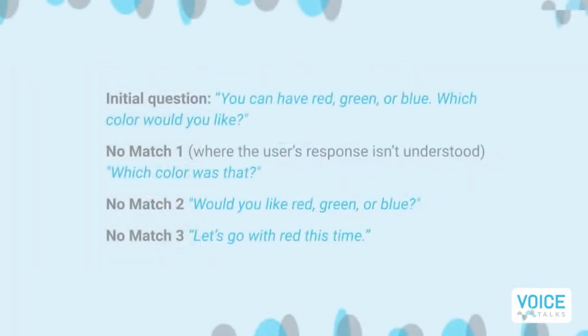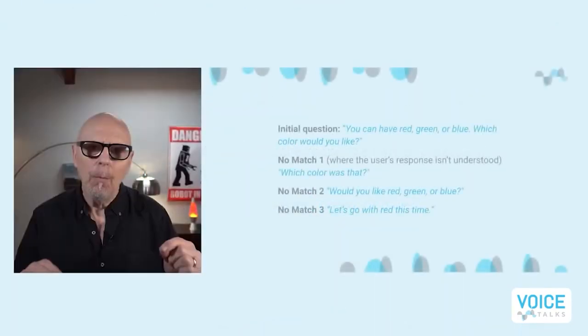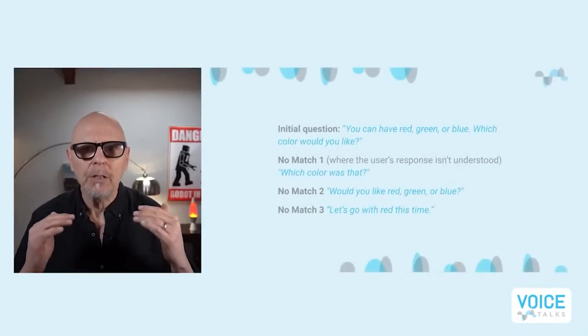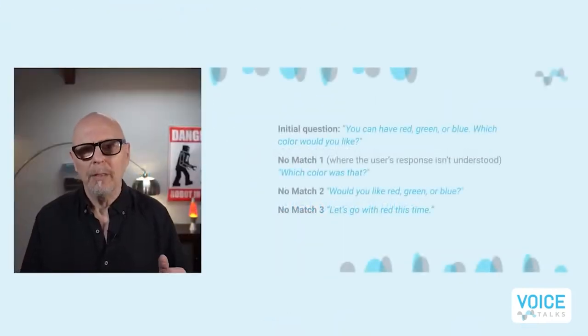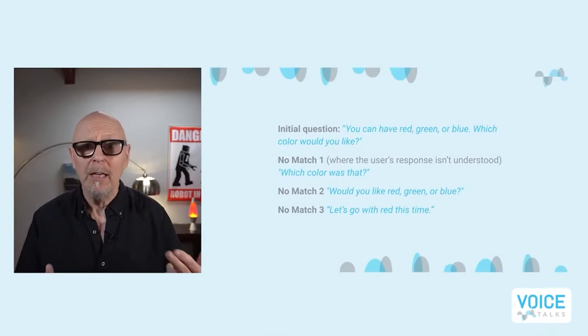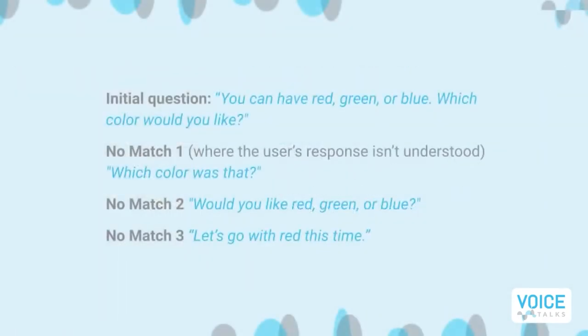If there's another no match, the next response would give a little more context: "Would you like red, green, or blue?" If they still don't respond with something the system can recognize, you might just move them forward to keep them in the game or story: "Let's go with red this time." You could also direct them to use buttons on the screen to make their choice. For situations where the user doesn't respond to a question, the mic will close after a predetermined number of seconds, requiring the user to use touch input.